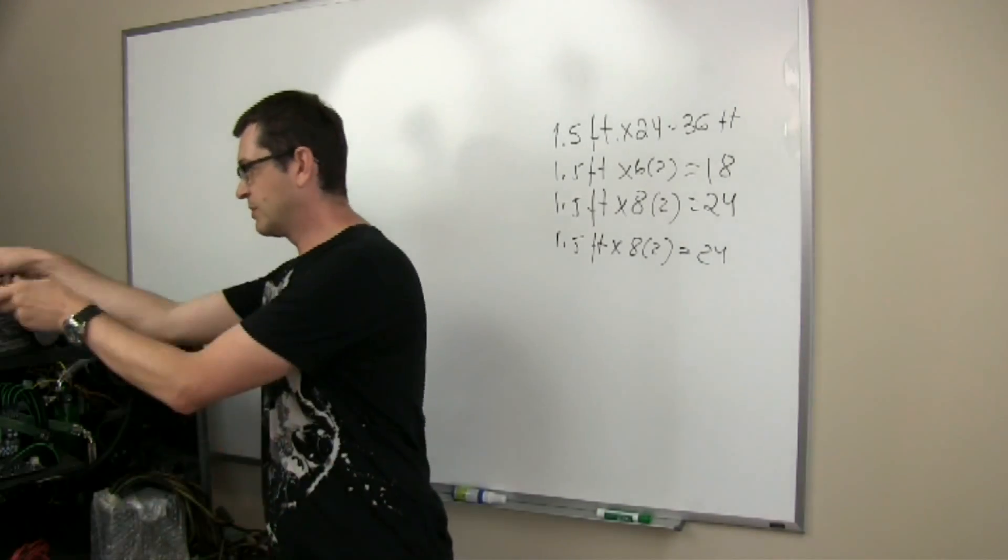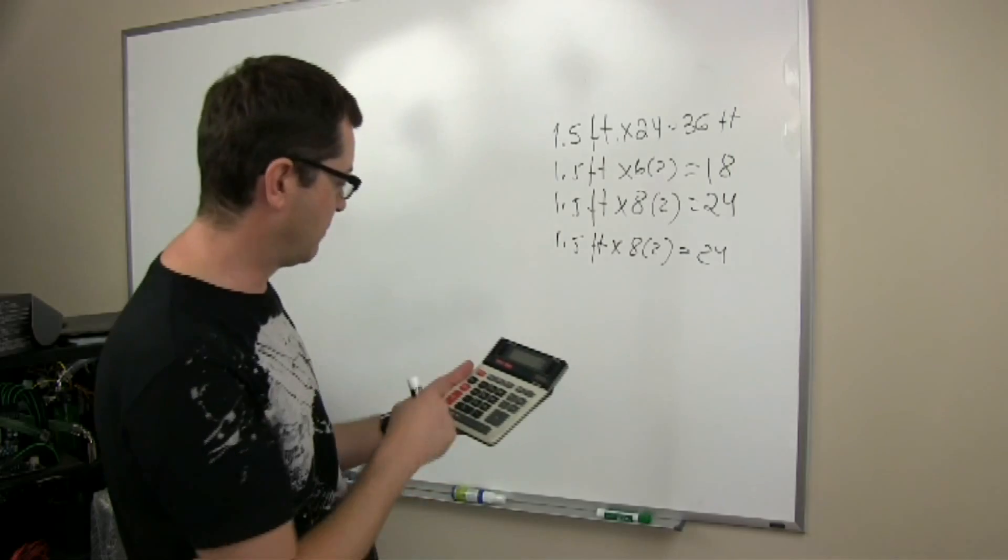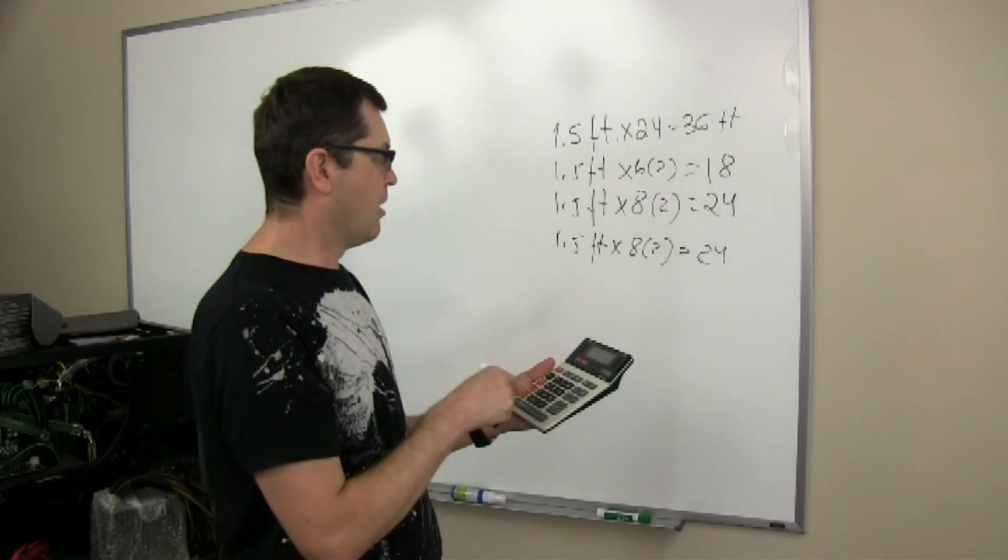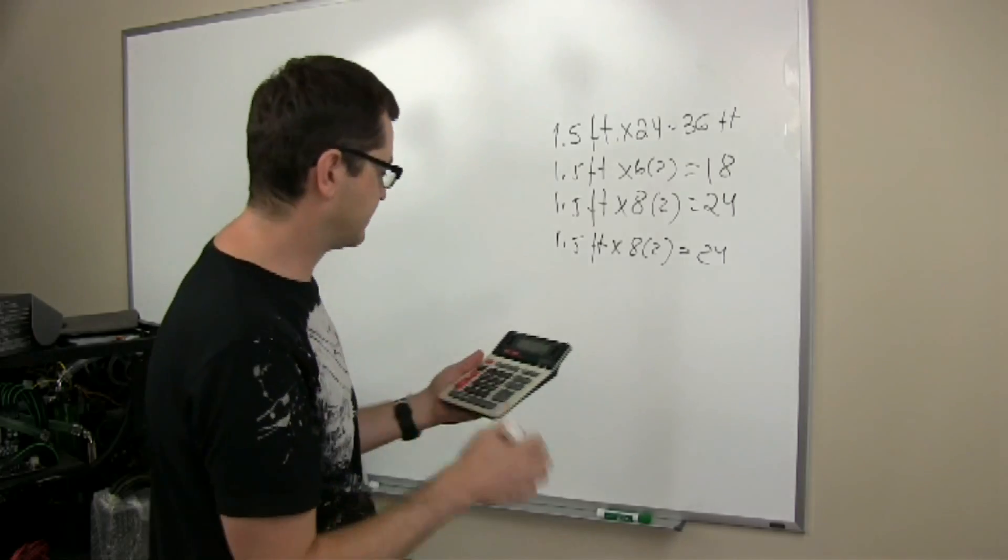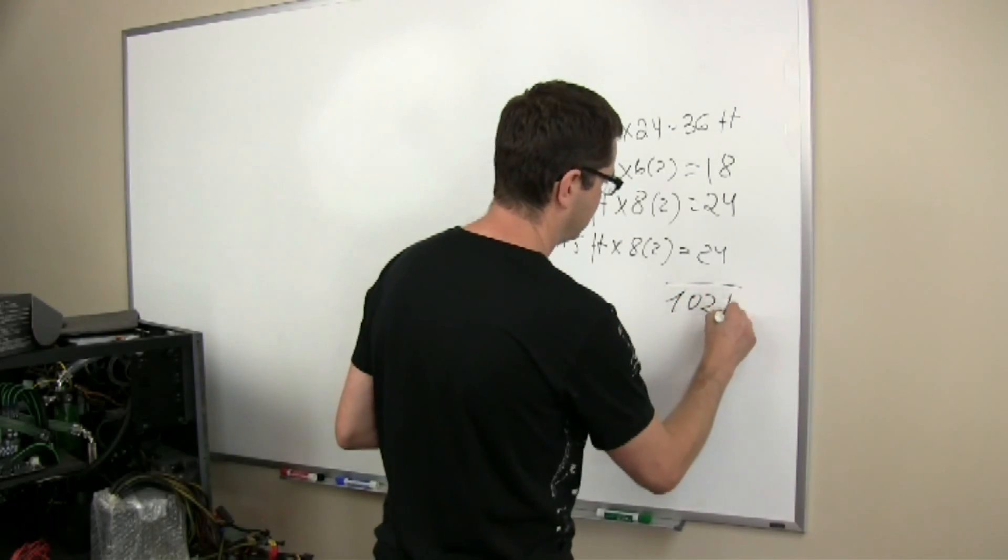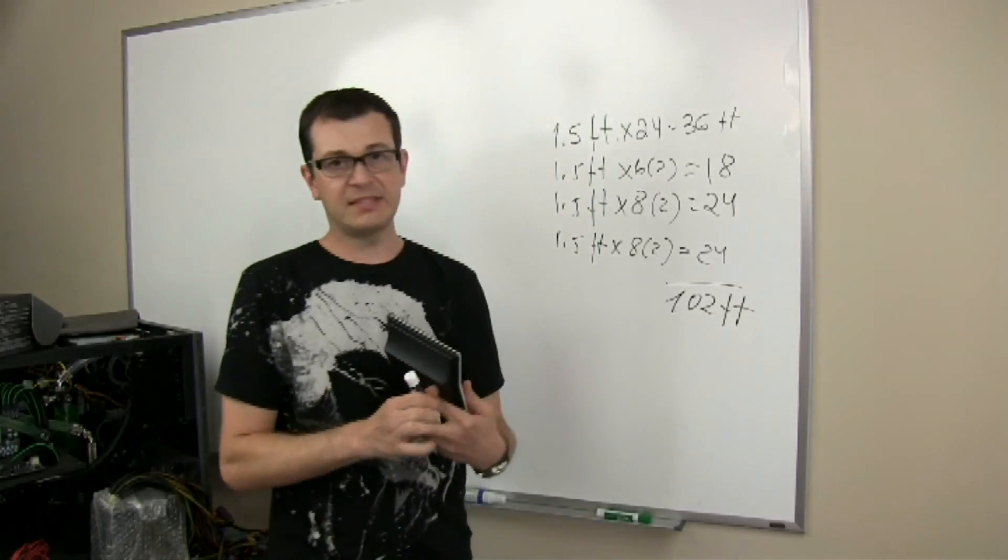So let's calculate the total. How much sleeve we require: 36 plus 18 plus 48, and this will be 102 feet total. This is the exact measurement.